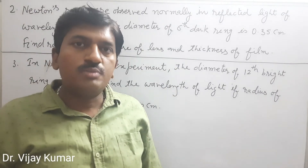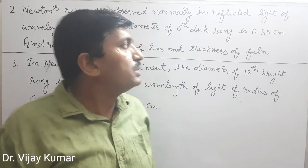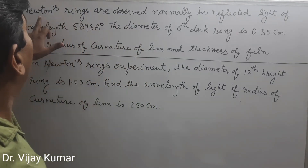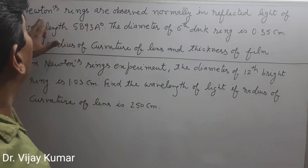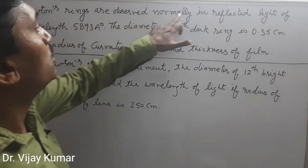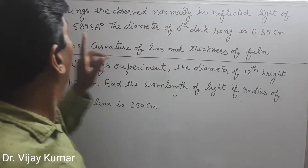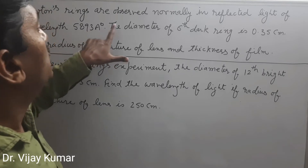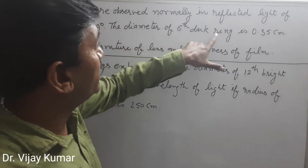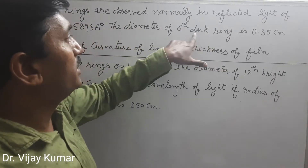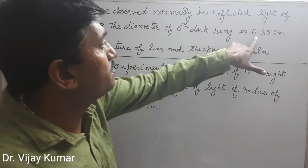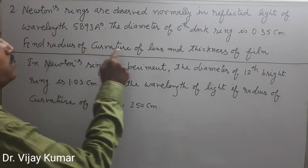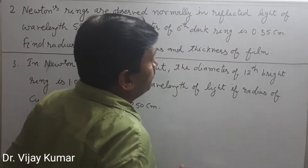Just like the first problem, you have to do these two parts. The second problem: Newton's rings are observed normally in reflected light of wavelength 5893 Angstrom. The diameter of the 6th dark ring is 0.35 centimeter. Find the radius of curvature of the lens and the thickness of the film.